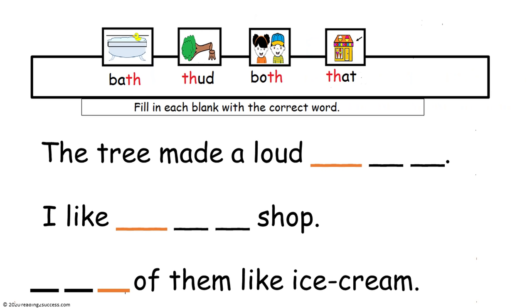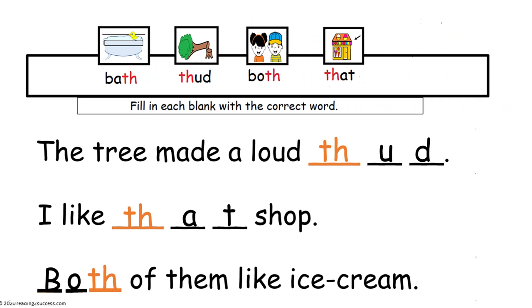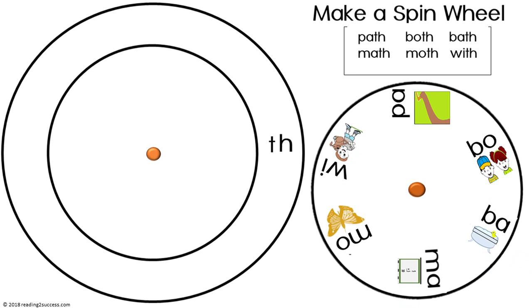Next is the fill in each blank with the correct word, and again we have three sentences and four words. The words are bath, thud, both, and that. And children need to decide which word completes each sentence and which word is not needed. And the answers are: the tree made a loud thud, I like that shop, both of them like ice cream.